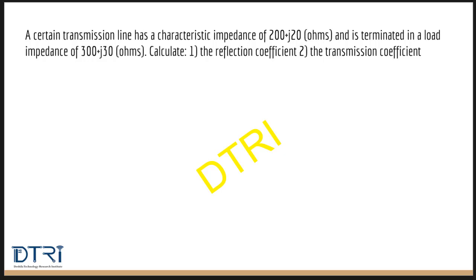This is the problem statement. A certain transmission line has a characteristic impedance of 200 plus j20 ohms and is terminated in the load impedance of 300 plus j30 ohms. We have to calculate the reflection coefficient and the transmission coefficient.